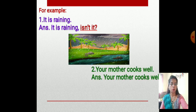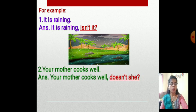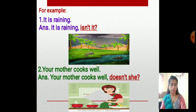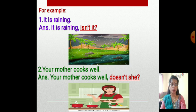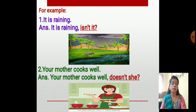One more example: 'Your mother cooks well.' Here also the sentence is affirmative — a positive sentence — so the question tag is always in negative form. The answer is: 'Your mother cooks well, doesn't she?' That is the question tag, and at the end there is a question mark.